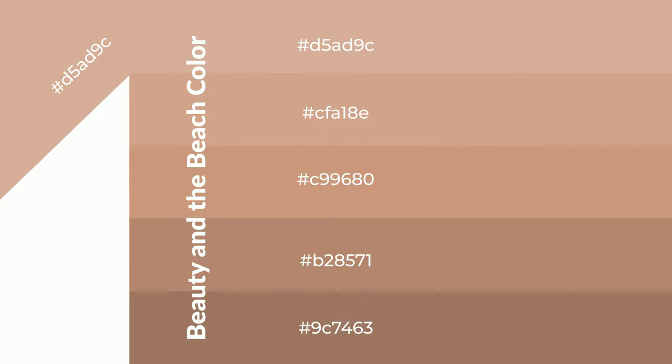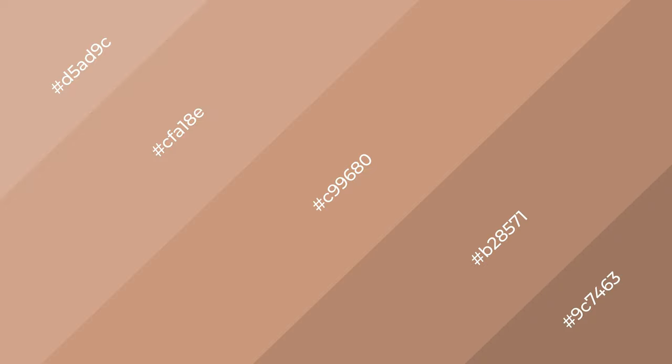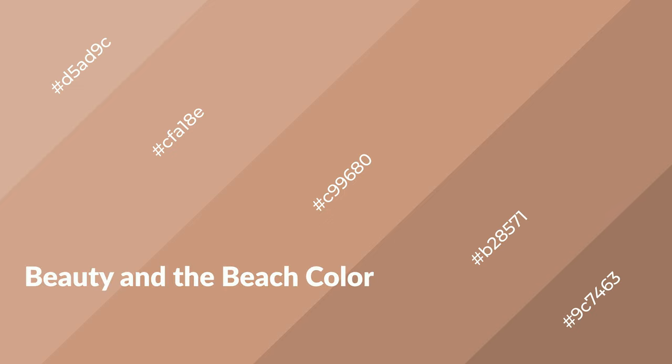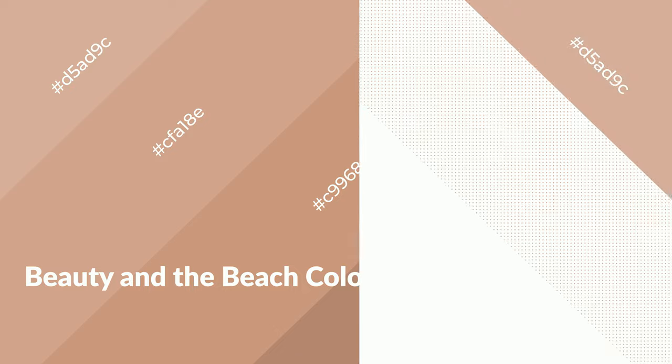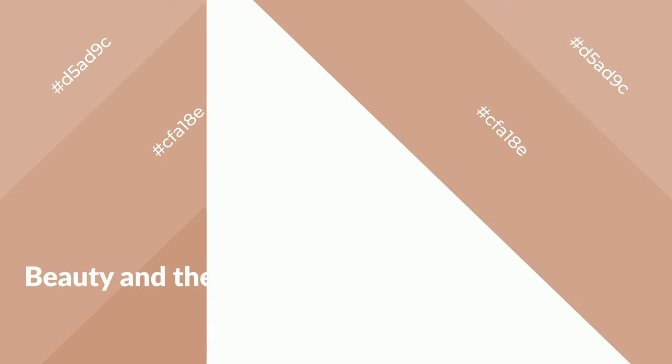To generate shades of a color, we add black to the color. Shades are used in patterns, 3D effects, and layers, and they create depth and drama. Beauty and the beach is a warm color that emits cozier and active emotions. Warm colors are symbols of warmth, fire, heat, and sunshine.